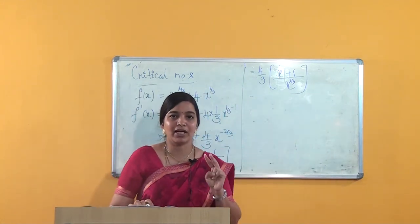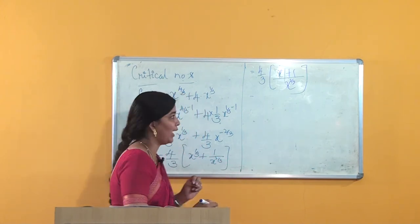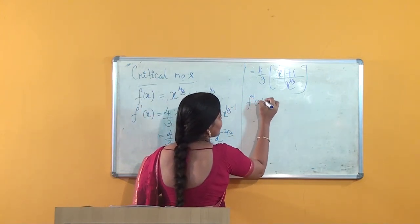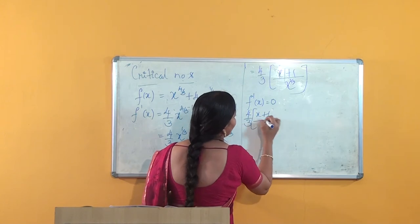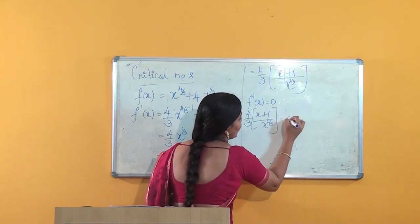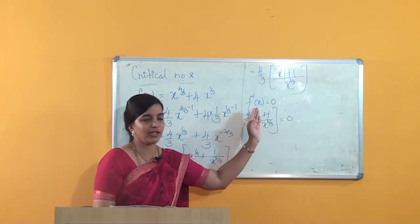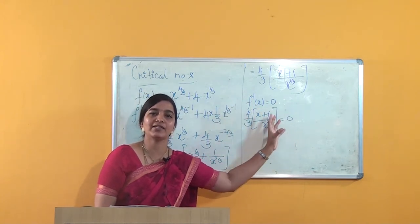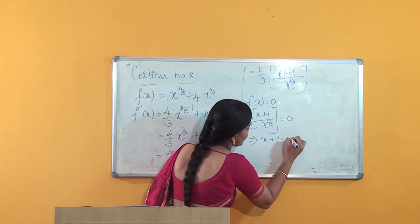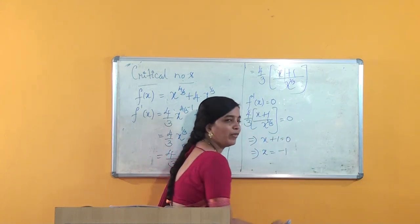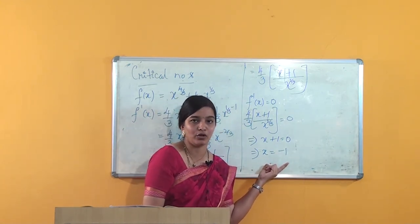Two cases are possible: f'(x) = 0 or f'(x) does not exist. When f'(x) = 0, we get (4/3)·(x + 1) / x^(2/3) = 0. This function is defined for all values of x in the domain of f, so we get x + 1 = 0, that is x = −1. Clearly, one critical point we have obtained is x = −1.